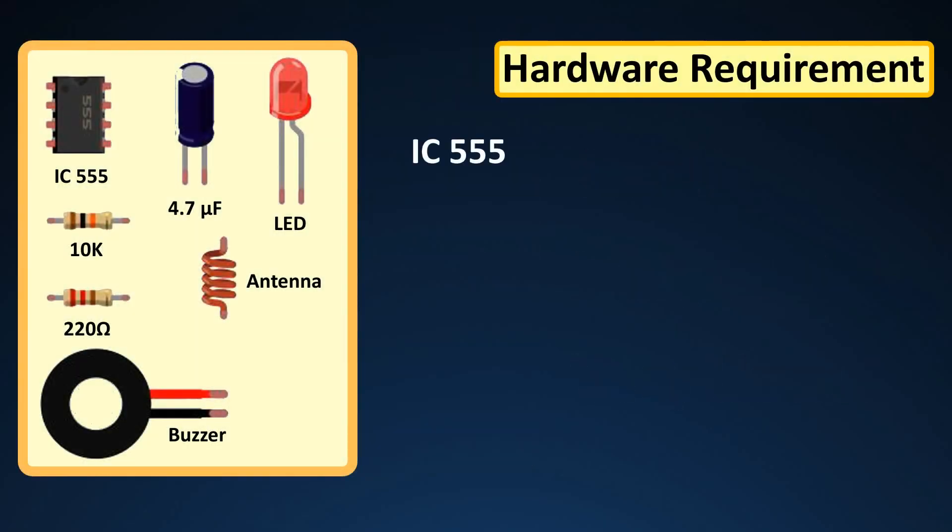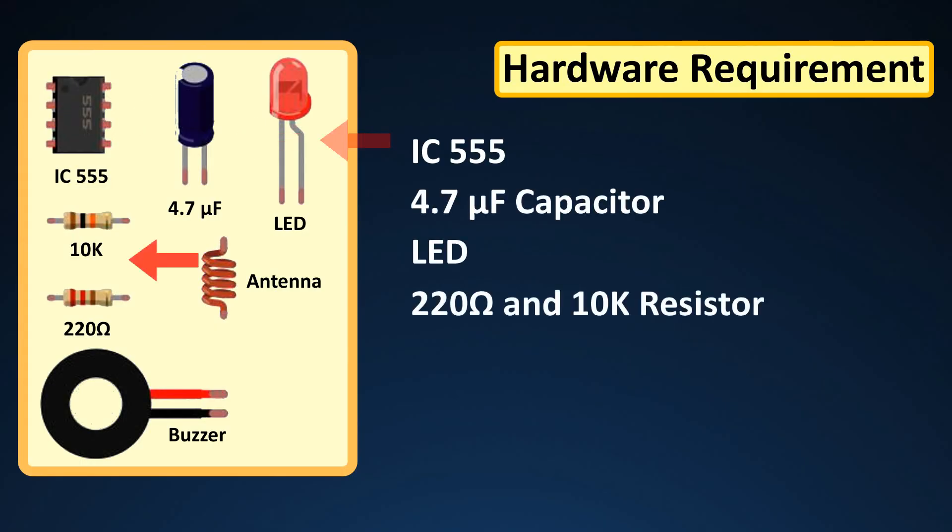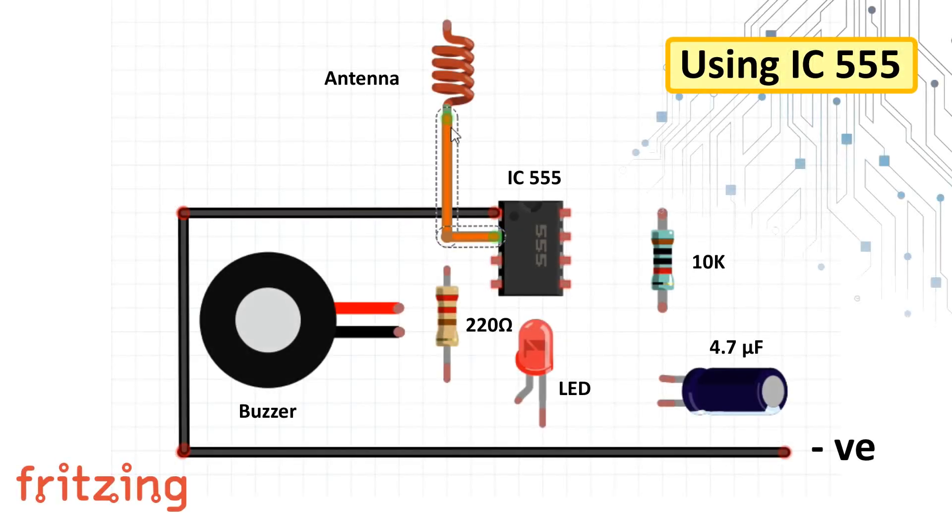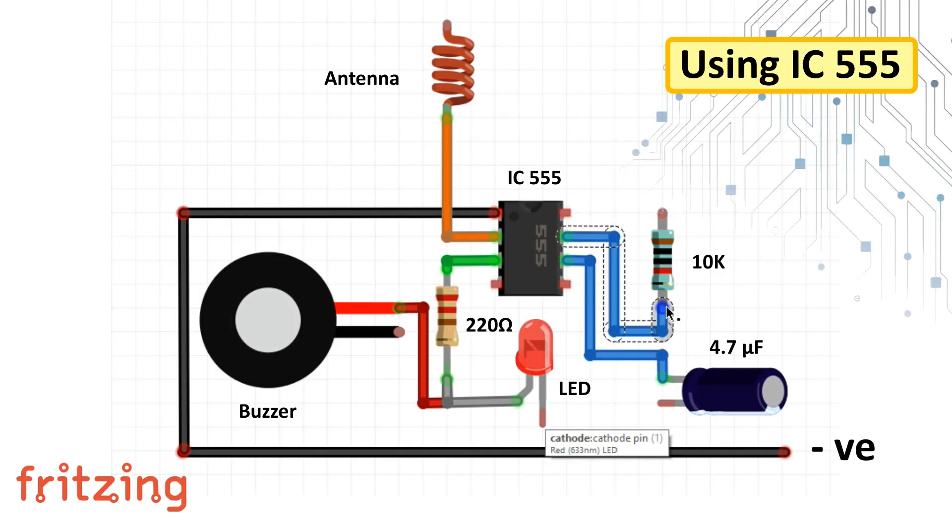For this setup we need a 555 timer IC, 4.7 microfarad capacitor, LED, 220 ohm and a 10k resistor, buzzer and a homemade antenna. Connect pin number 1 to ground, pin 2 to the antenna, pin 3 to the LED and the buzzer, pin 6 to the positive leg of the capacitor and pin 7 to one end of the 10k resistor.